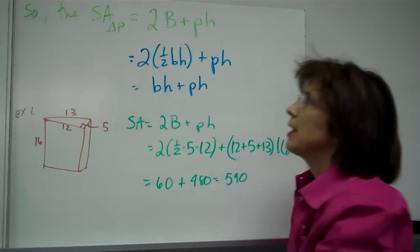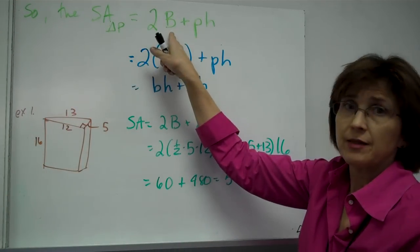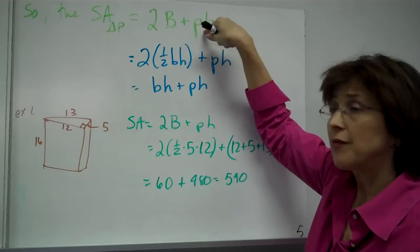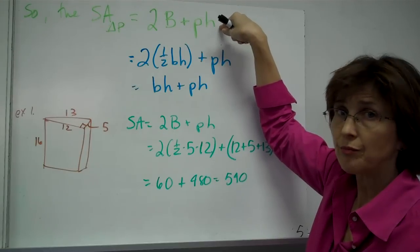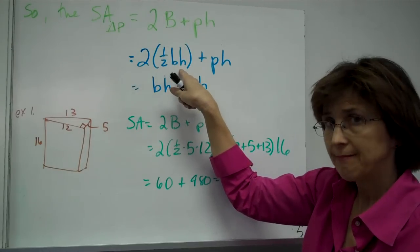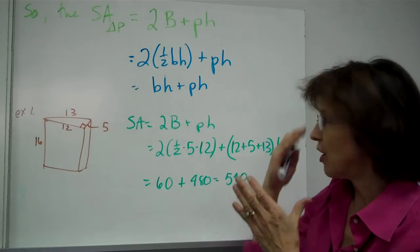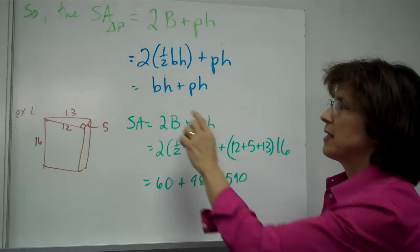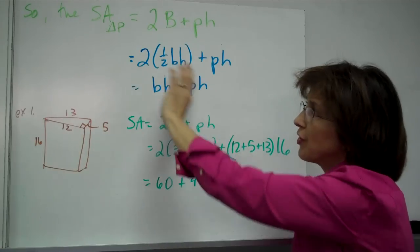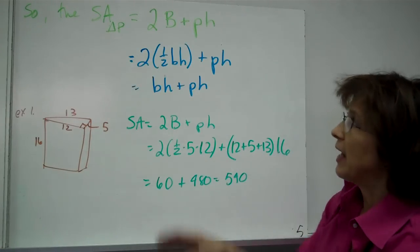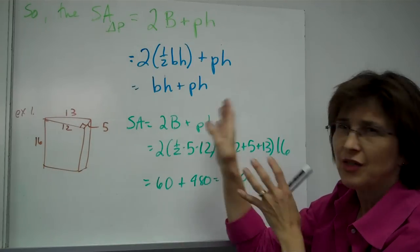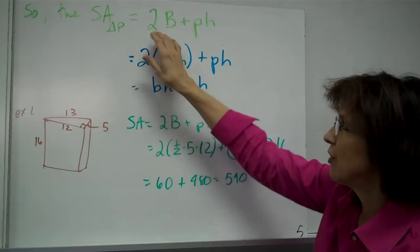The surface area of a triangular prism is going to be two bases — two areas, because big B is the area of the base and there are two triangles — plus the perimeter of that triangle times the height of the whole prism. So it's two times one half the base times the height, plus the perimeter times the height. To condense it: BH plus PH for the surface area of a triangular prism. It's good to remember how you get there, because if you forget you can always go back to the full formula.